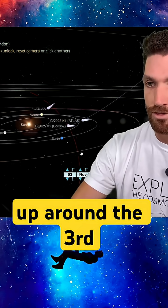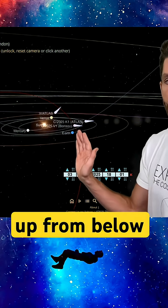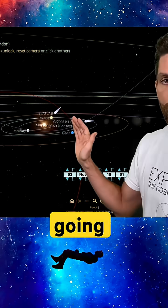Borisov is first picked up around the 3rd of November, shooting up from below the ecliptic plane and going over it like this.